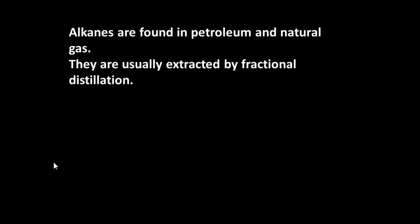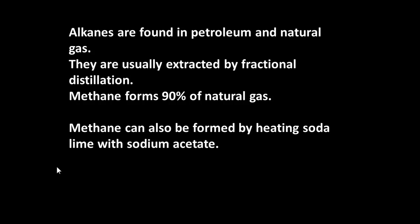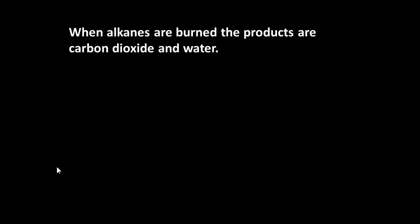Alkanes are found in petroleum and in natural gas and in petroleum they're extracted by fractional distillation. Methane is particularly important because it's 90% of natural gas. In the lab you can form methane by heating soda lime with sodium acetate. You get methane and sodium carbonate formed. If you burn alkanes then the products are carbon dioxide and water so 2C2H6 plus 7O2 would give 4CO2 as a gas plus 6H2O also in gaseous form.